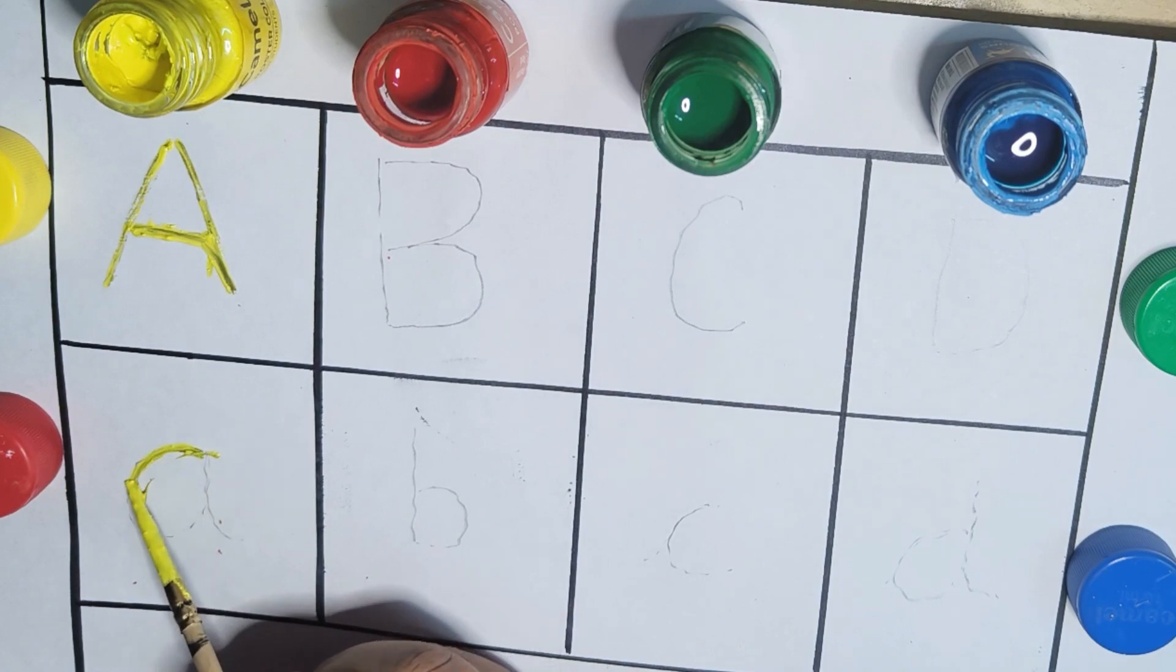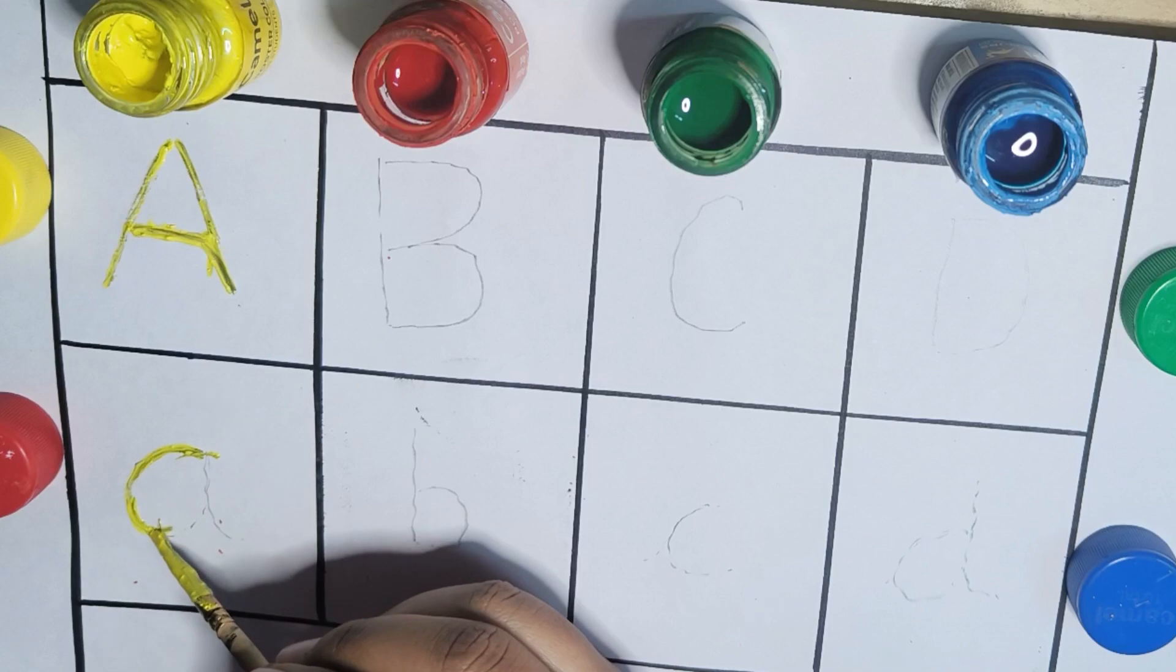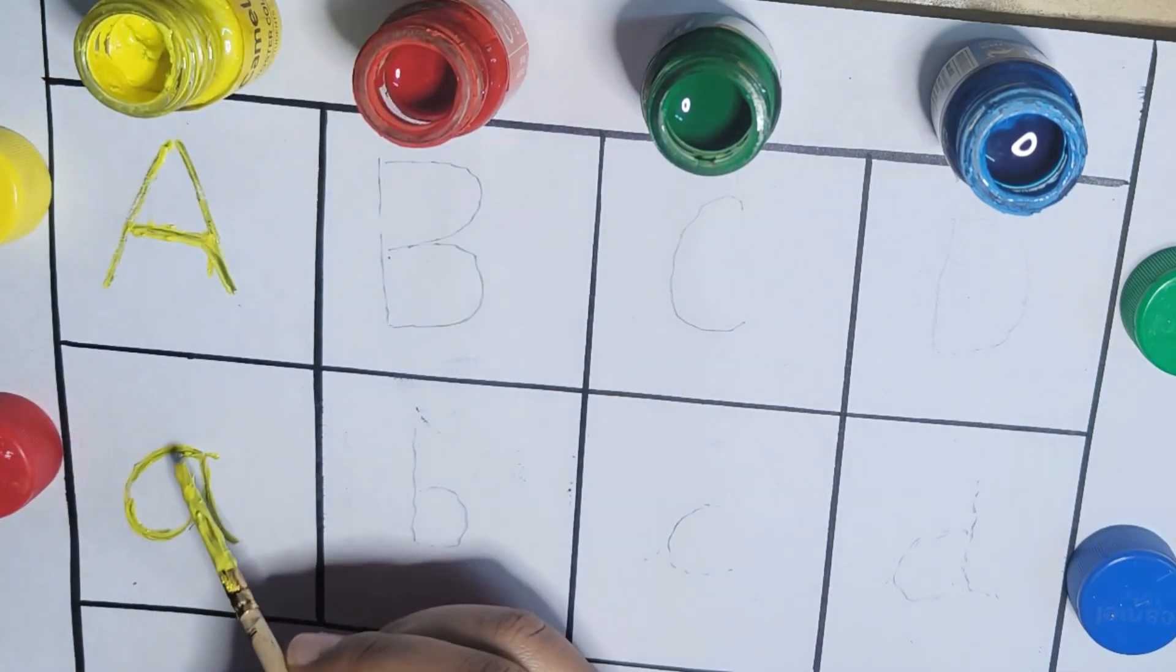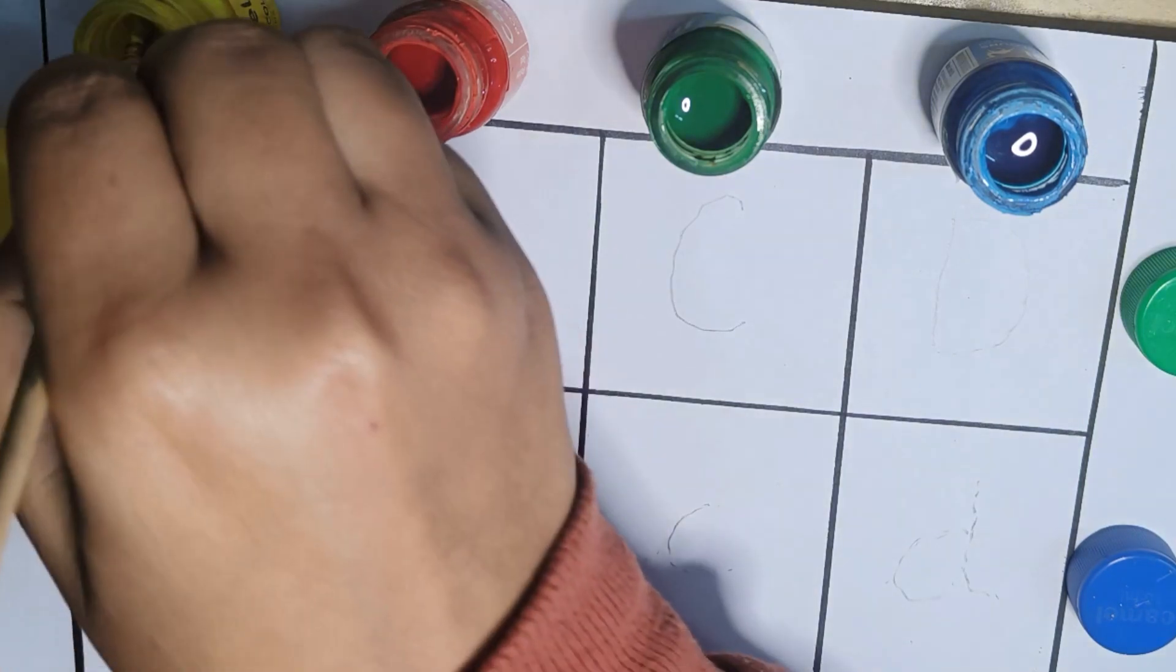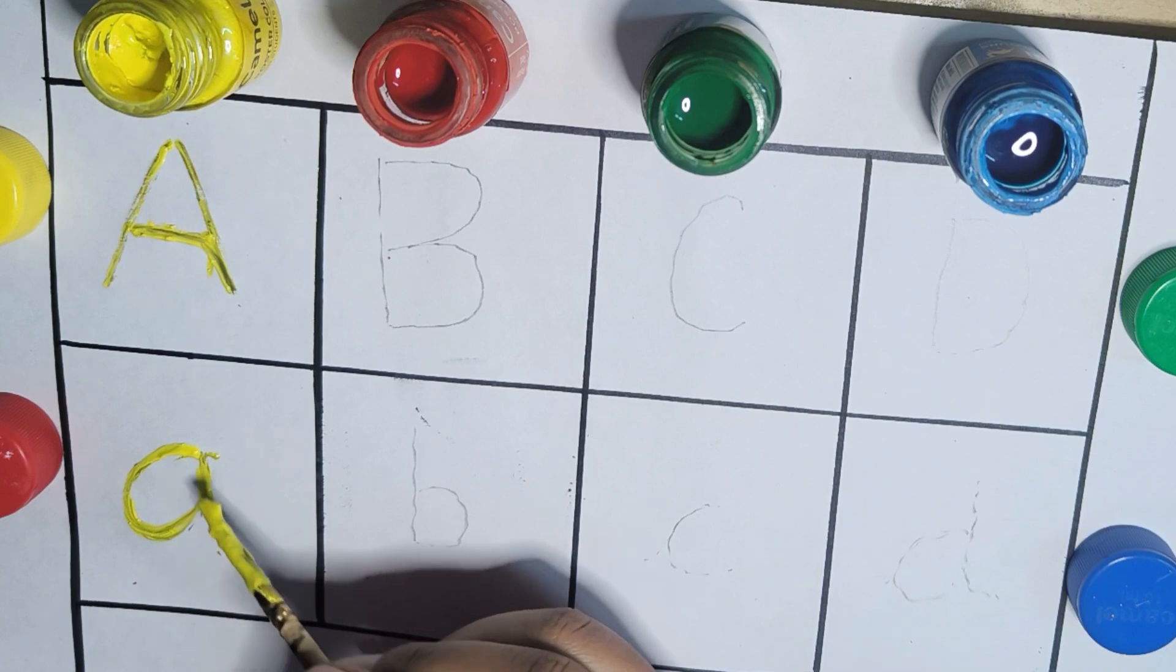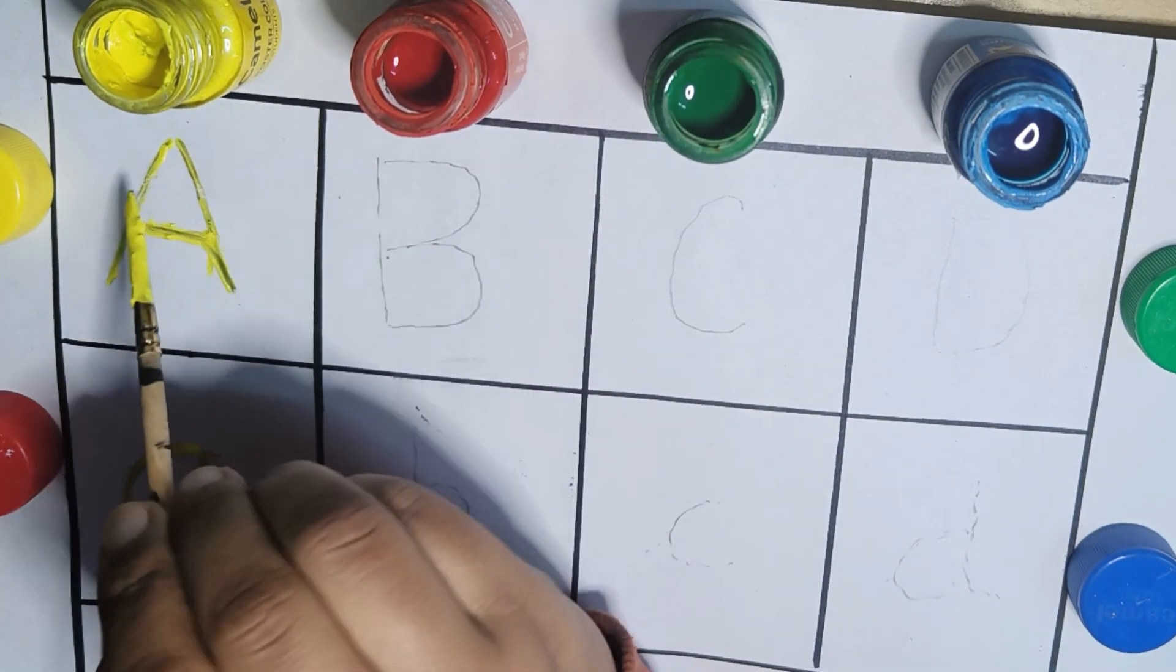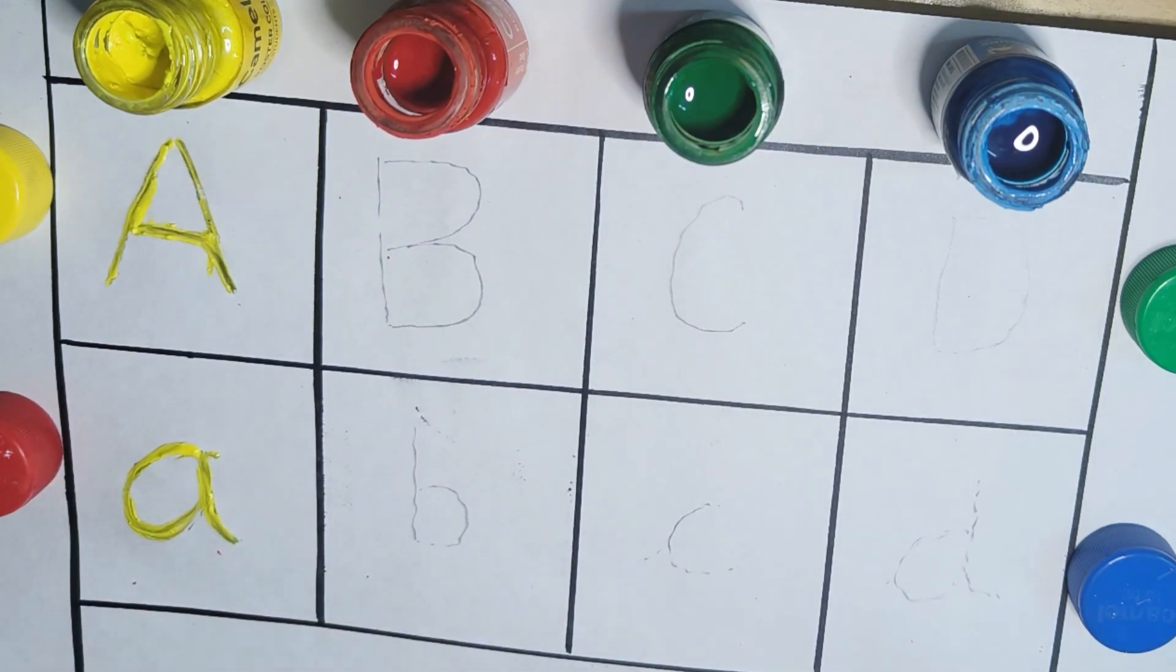Now I am writing small a. You have to write A like this way. This is small a. This is big and this one is small. A for apple.